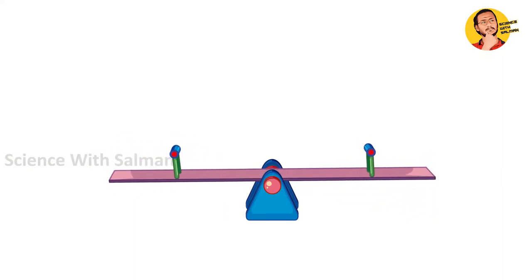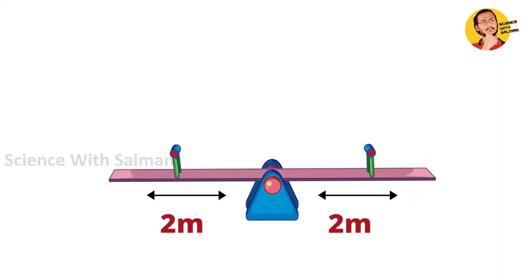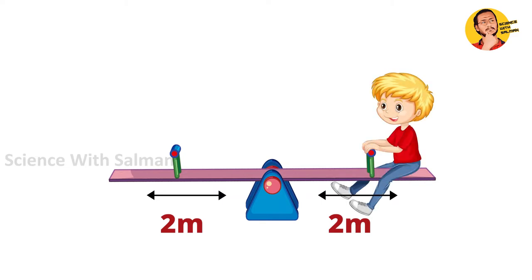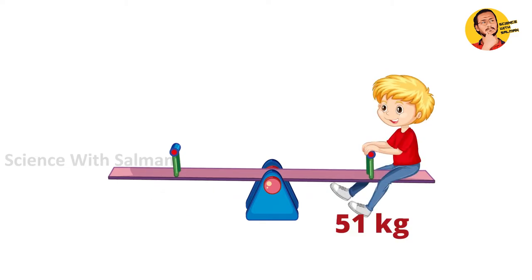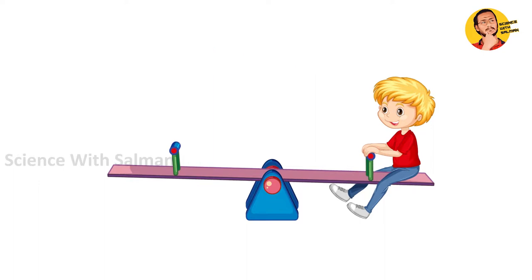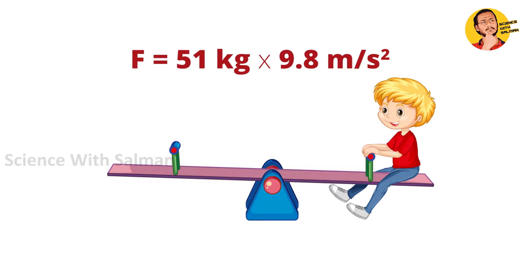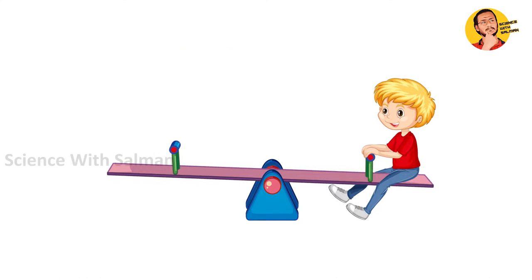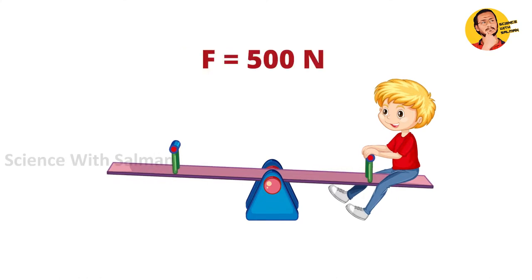The left side lever arm is 2 meters. There is around 67 kg on it. We can calculate the force using F = mA. F is equal to 51 kg into 9.81 meters per second squared. That gives us approximately 500 N of force.